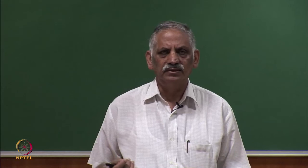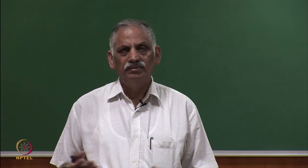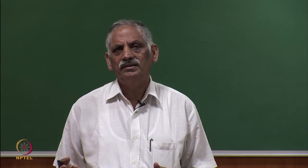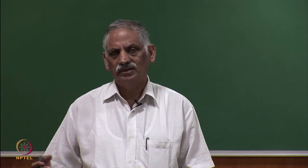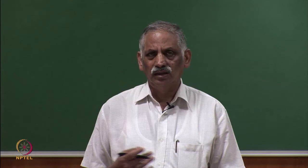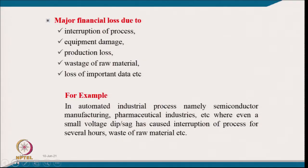Similarly, in pharmaceutical manufacturing, if a chain of process is interrupted, the whole chemical combination must be wasted and cleaning is also required — causing loss of production, loss of raw material, and equipment damage. Even a small voltage dip or sag can cause interruption of process for several hours and waste of raw material in automated industrial processes such as semiconductor manufacturing and pharmaceutical industries.